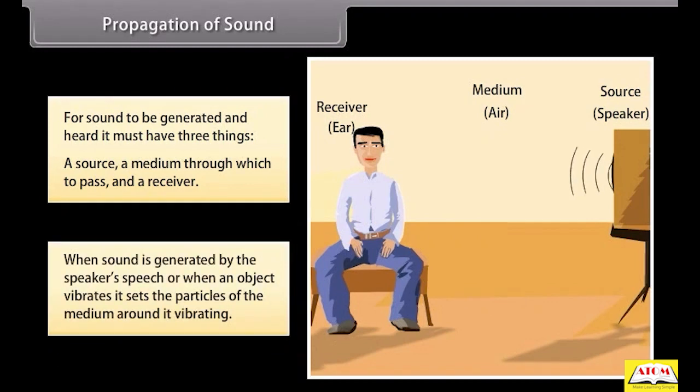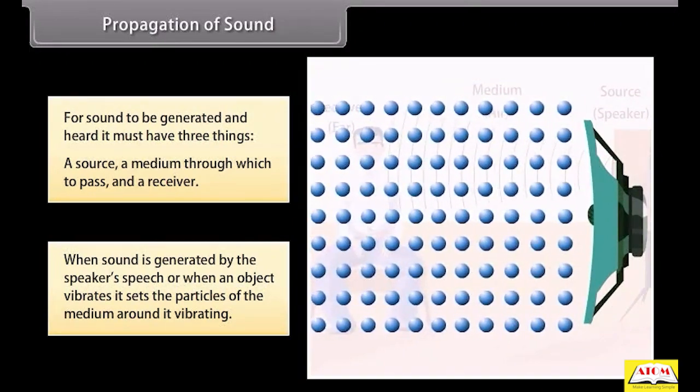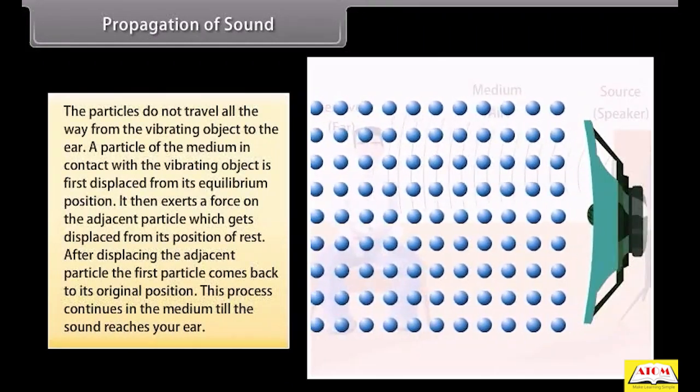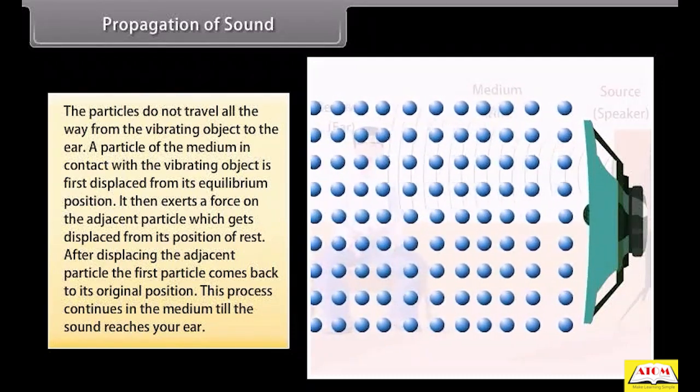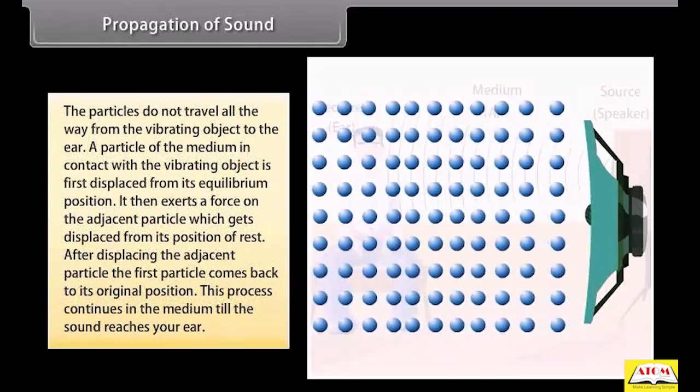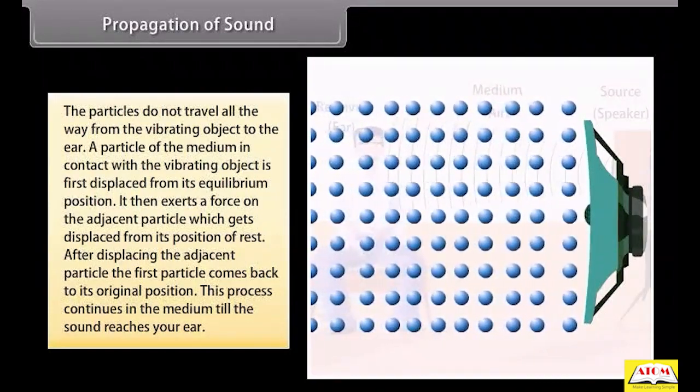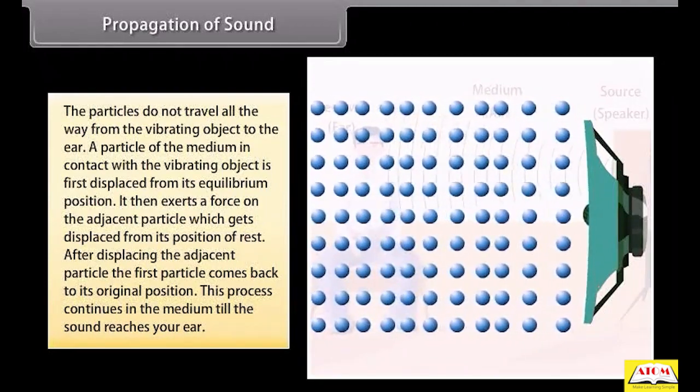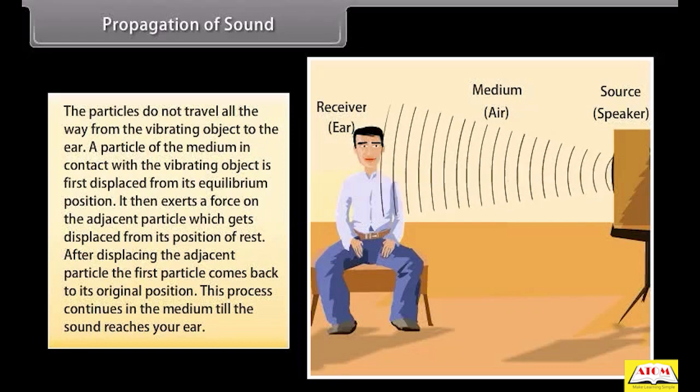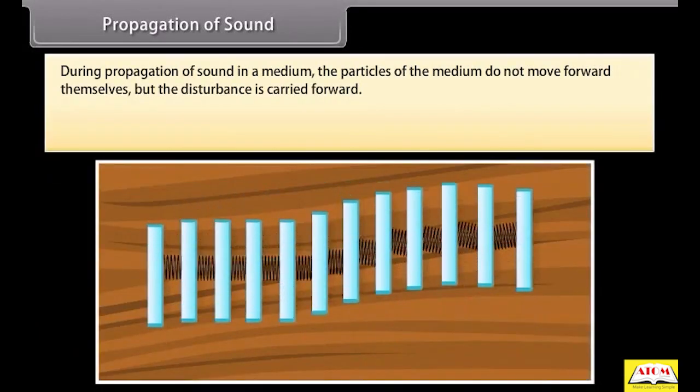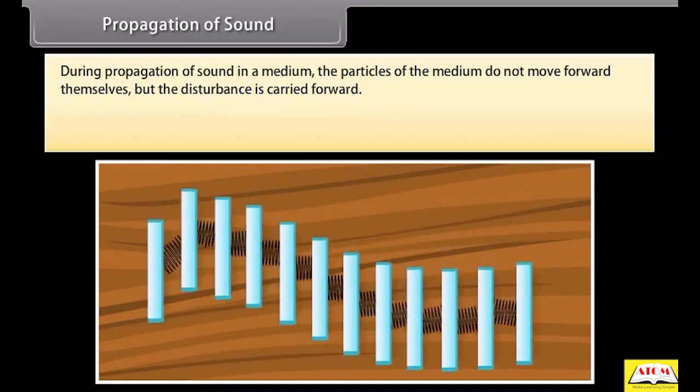When a sound is generated by the speaker's speech, or when an object vibrates, it sets the particle of the medium around it vibrating. The particles do not travel all the way from the vibrating object to the ear. A particle of the medium in contact with the vibrating object is first displaced from its equilibrium position. It then exerts a force on the adjacent particle which gets displaced from its position of rest. After displacing the adjacent particle, the first particle comes back to its original position. This process continues in the medium till the sound reaches your ear.